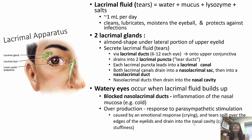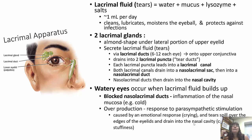There are two lacrimal glands, which are almond-shaped and located under the lateral portion of the upper eyelid. They secrete lacrimal fluid via lacrimal ducts — there are 6 to 12 for each eye — onto the upper conjunctiva. Then it drains into two lacrimal puncta, which we would call tear ducts. Each lacrimal puncta leads into a lacrimal canal, and both lacrimal canals drain into a nasolacrimal sac and then into the nasolacrimal duct.